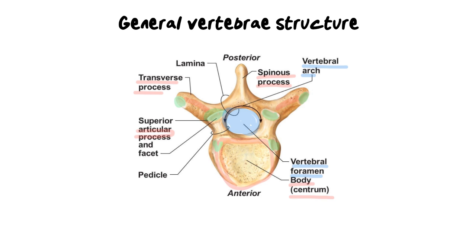Now, depending on your level of education and whether you're doing IEB or NSC, you might need to know a few more labels. These are the lamina — the walls at the top of the arch — and the pedicle, which is the joining part of the bone. The lamina and the pedicle both form the joins between the transverse process, the spinous process, and the centrum.